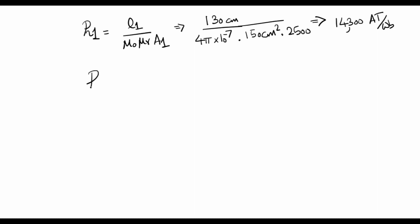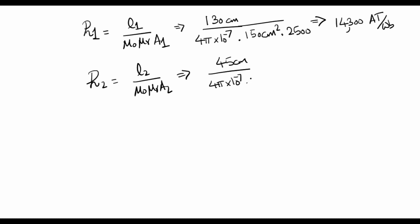Similarly, R2 = L2 / (mu_0 × mu_r × A2) = 45 cm / (4π × 10⁻⁷ × 2500 × 100 cm²), which comes out to approximately 27,600 ampere-turns per Weber.